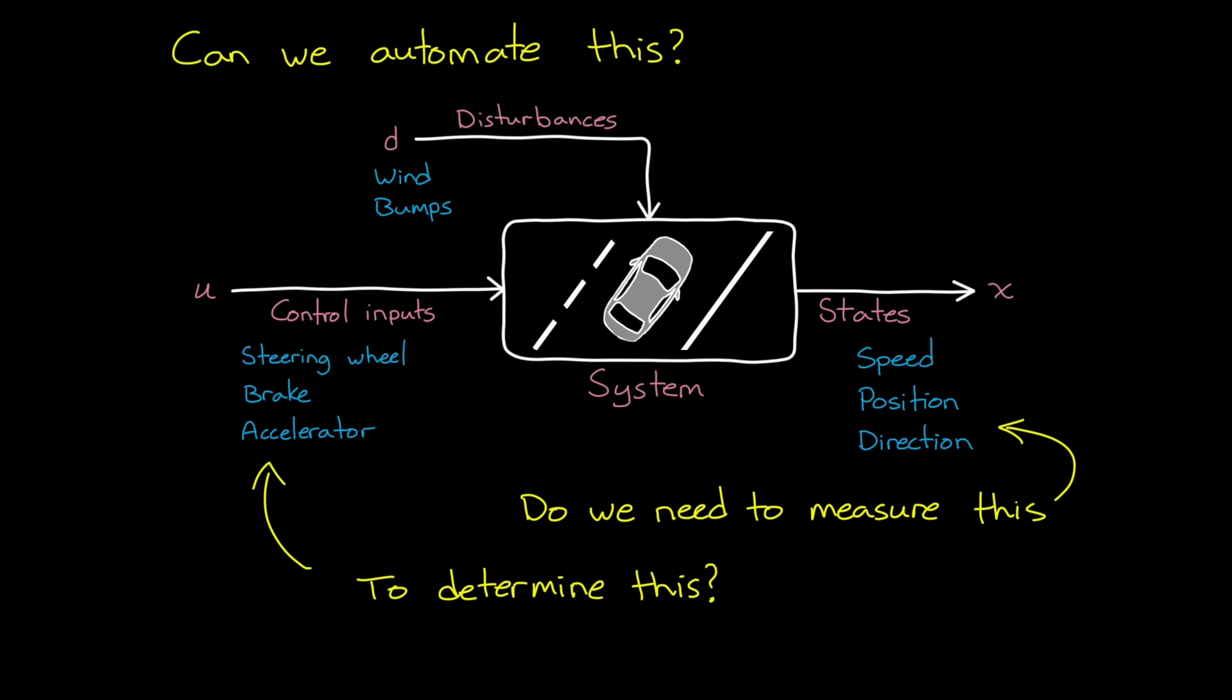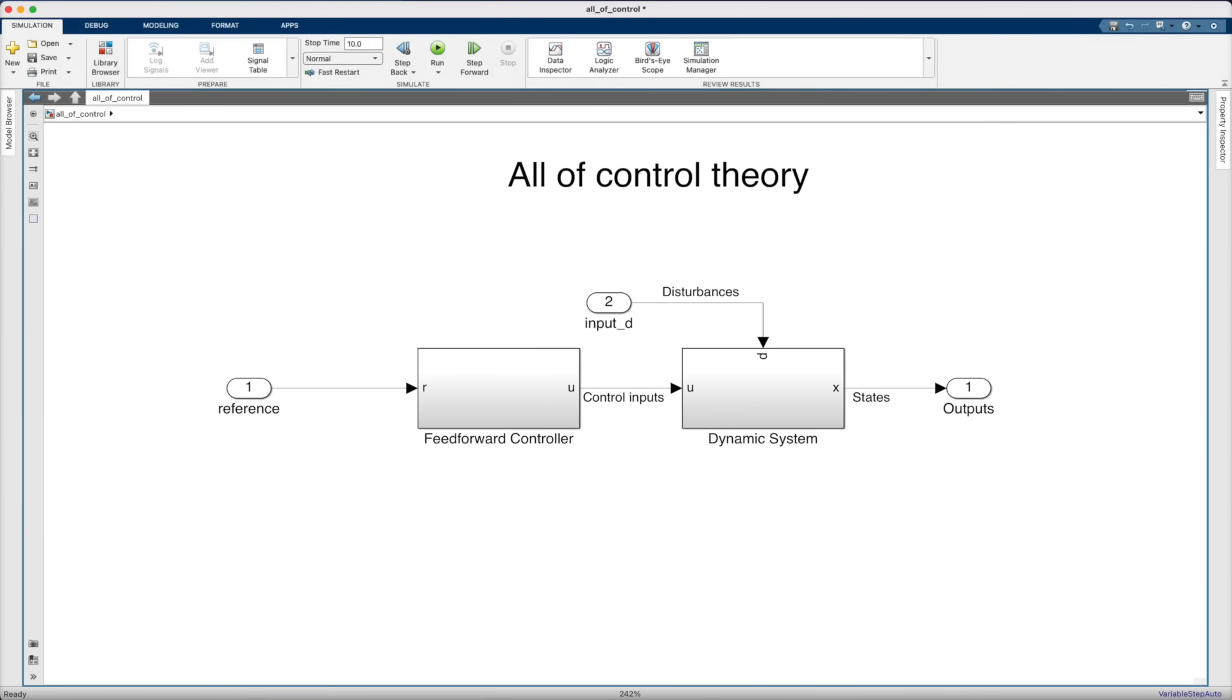We can control a system with an open-loop controller, also known as a feed-forward controller. A feed-forward controller takes in what you want the system to do, called the reference R, and it generates the control signal without ever needing to measure the actual state. In this way, the signal from the reference is fed forward through the controller and then forward through the system, never looping back. Hence the name feed-forward.